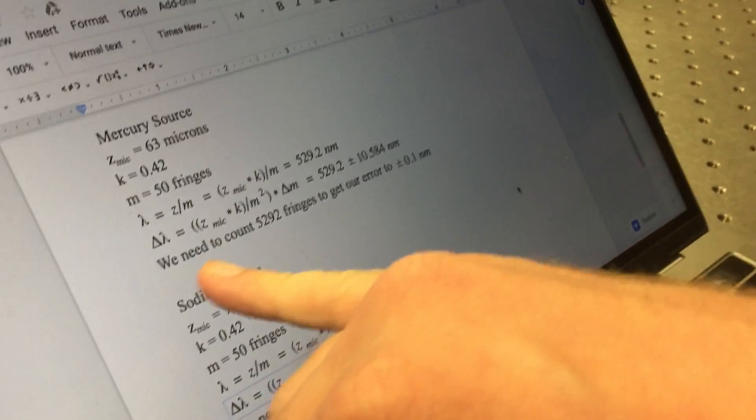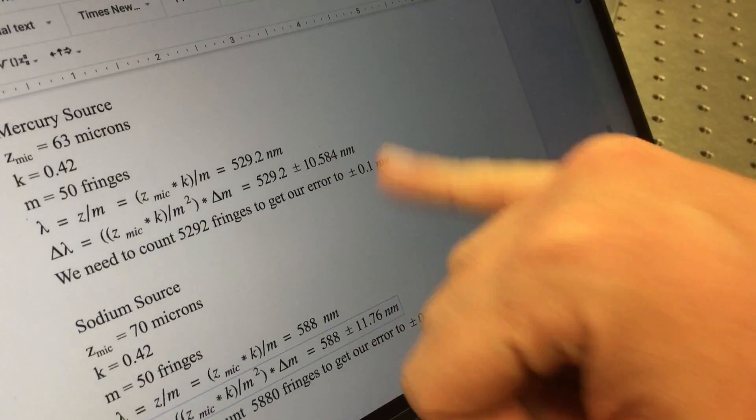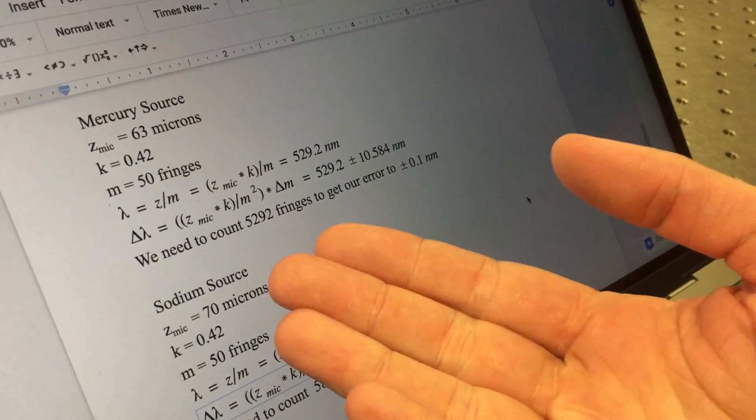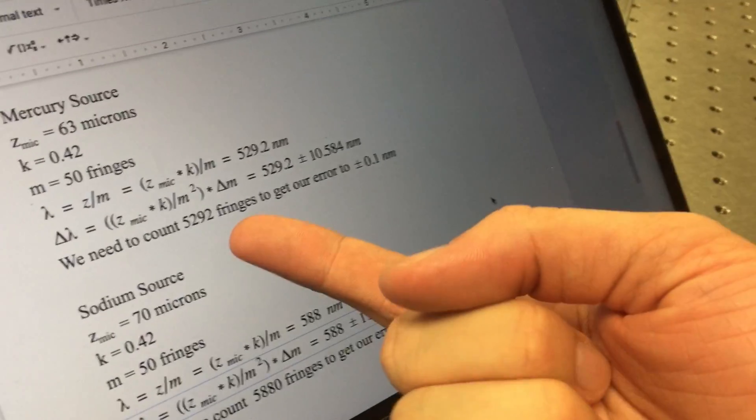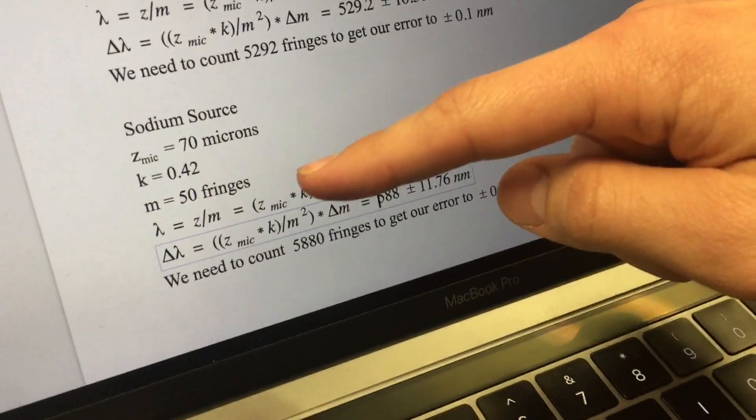We found our change in lambda with an error of plus or minus 10.584 nanometers. To get a 0.1 nanometer percent error, we need to count 5292 fringes.